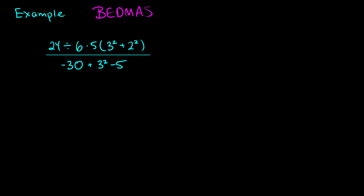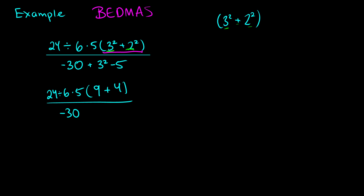Inside the brackets we have 3 squared plus 2 squared. But inside the brackets there are exponents and addition, so we follow the same priority list inside. We do the exponents first: 3 squared is 9 and 2 squared is 4. So we have 24 divided by 6 times 5, and inside the brackets we now have 9 plus 4. We keep the denominator: negative 30 plus 3 squared minus 5.